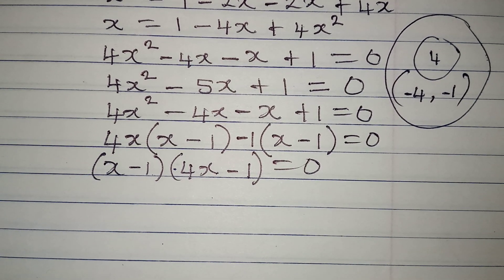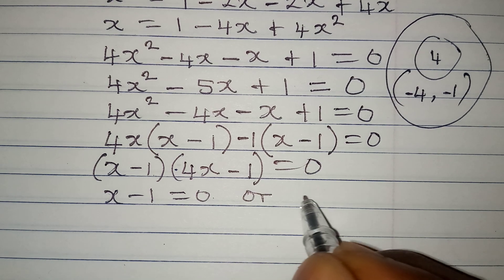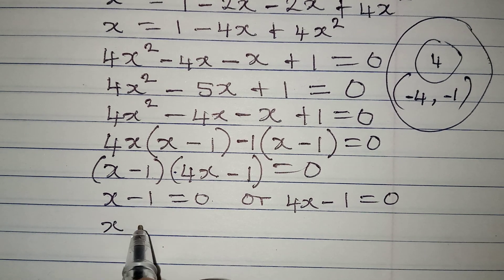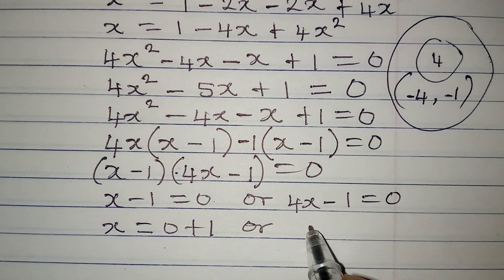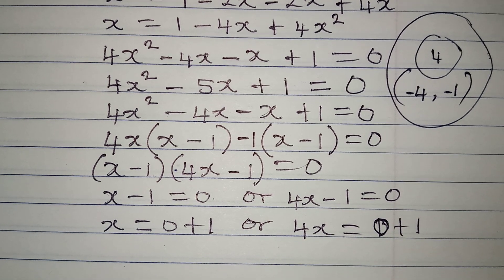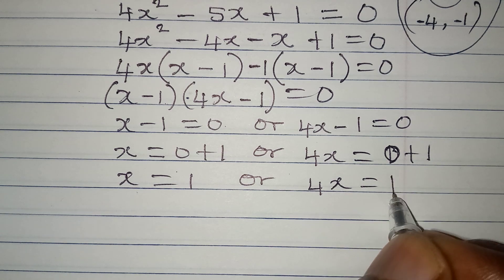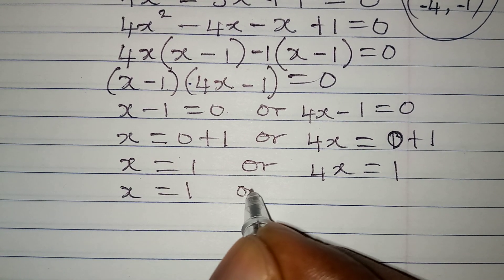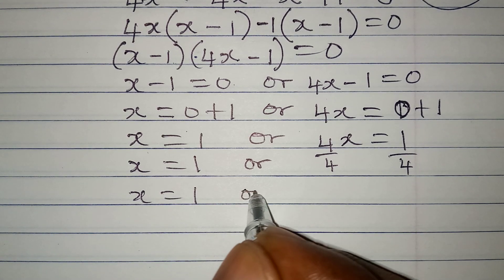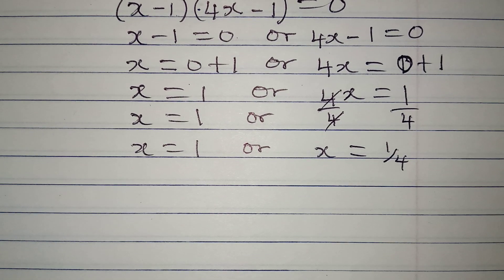Applying the zero product rule: either x minus 1 equals 0, or 4x minus 1 equals 0. From the first, x equals 1. From the second, 4x equals 1, so dividing both sides by 4 gives x equals 1 over 4.